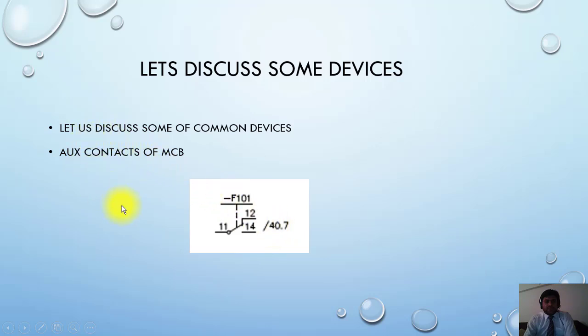Here I will give you a little understanding. This F101 that we have seen before is basically MCB. So another F101 and some contacts are shown. These are basically the auxiliary contacts of the MCB. In later slides I will explain what it means by auxiliary contact of any item.